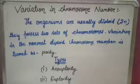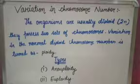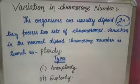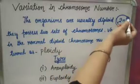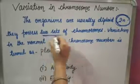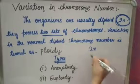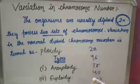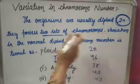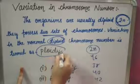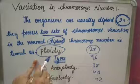Good evening everyone. Today we are going to start with variation in chromosome number, which is a part of the genetics chapter. Humans normally have 2n number of chromosomes — any organism having two sets of chromosomes, whether 46, 38, 40, or 42, is called diploid. The variation in the normal diploid cell chromosome number is termed as ploidy.